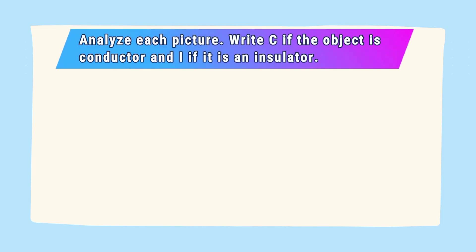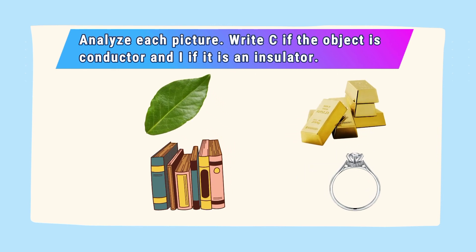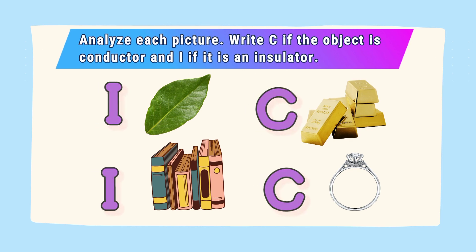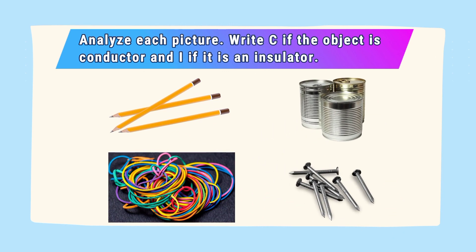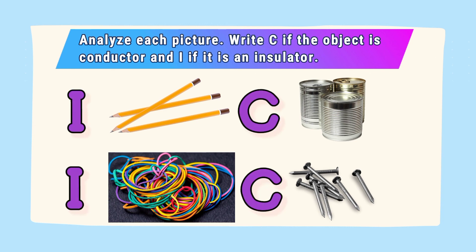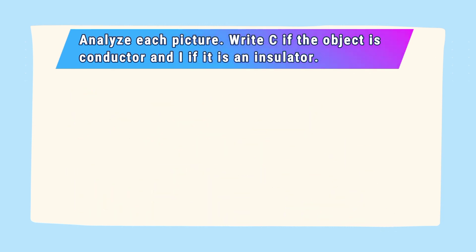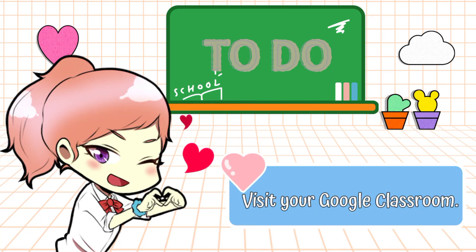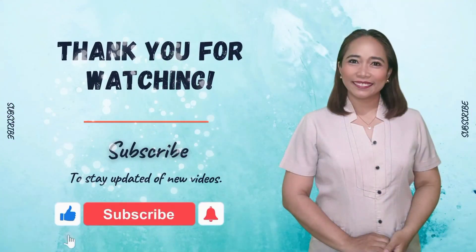Now, analyze each picture. Write C if the object is a conductor and I if the object is an insulator. Did you get it all correct? Well, that's great! Now, you can visit your Google Classroom for more learning tasks.